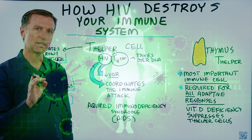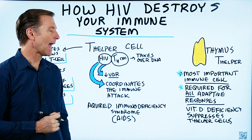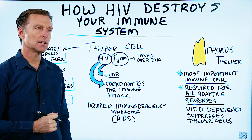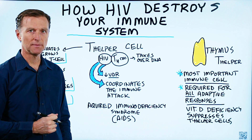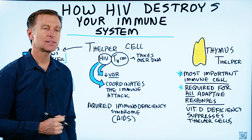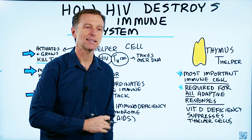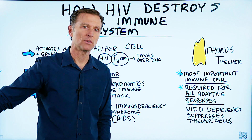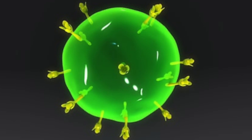This virus has a very unique strategy of attacking something so important that it basically knocks the entire army out — all by attacking this one cell: the T helper cell.